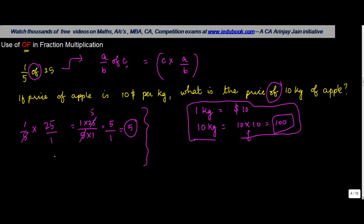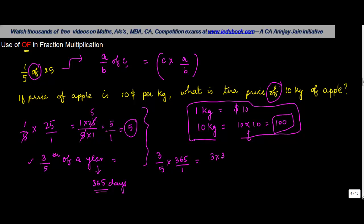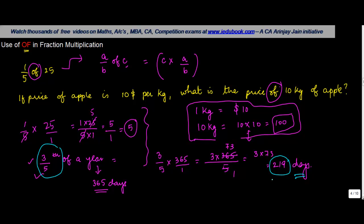Let's take another example. How much is 3/5 of a year? We know a year is 365 days. So 3/5 of a year equals 3 upon 5 into 365, which you can write as 3 into 365 divided by 5. Dividing 365 by 5 gives 73, and 3 into 73 is 219. So 3/5 of a year is 219 days.